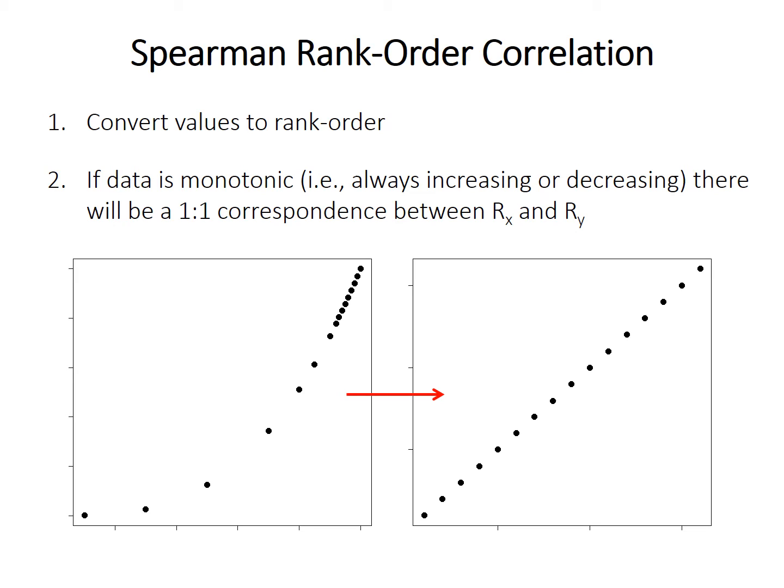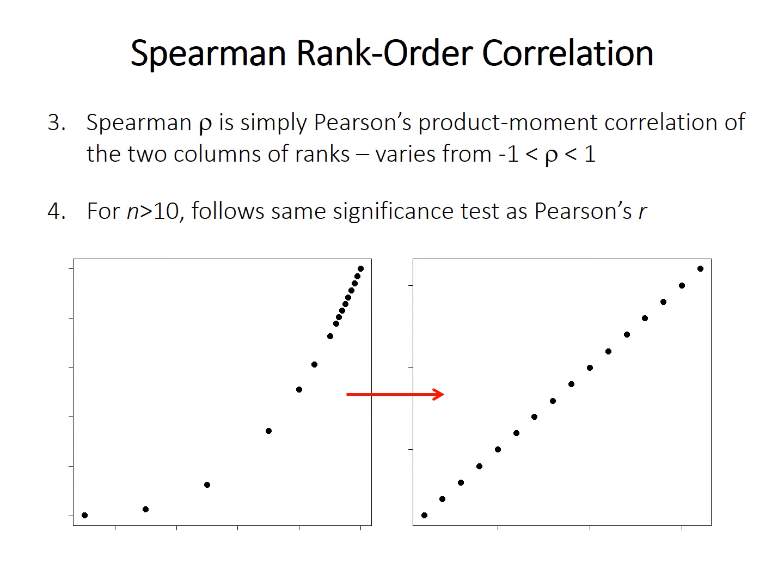If the data is monotonic — meaning the values always increase or always decrease — there will be a perfect one-to-one correspondence between the ranks of one variable (rx) and the ranks of the other (ry). The correlation coefficient, called rho, is calculated as the Pearson's product-moment correlation of the rank order data instead of the raw data. Like Pearson's r, Spearman's rho ranges from -1 to +1, where -1 is perfect inverse correlation, 0 is no correlation, and +1 is perfect positive correlation. Significance testing works the same way, converting to a t-statistic and assessing against the t-distribution.